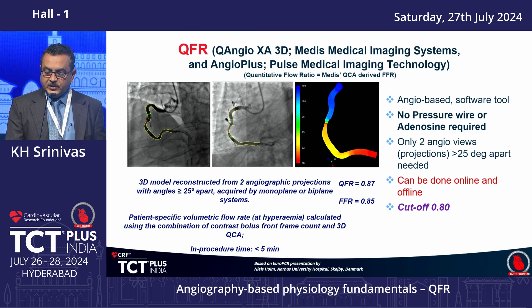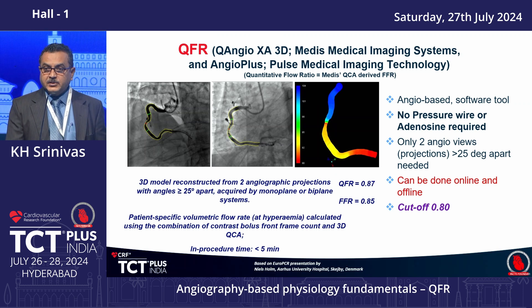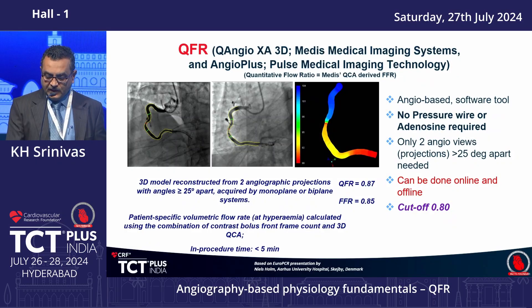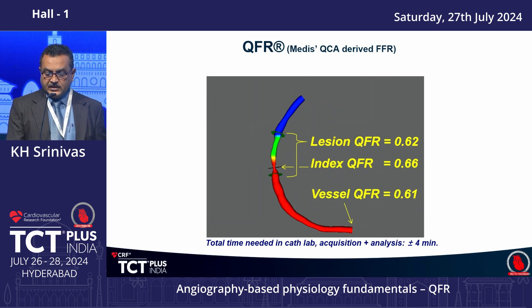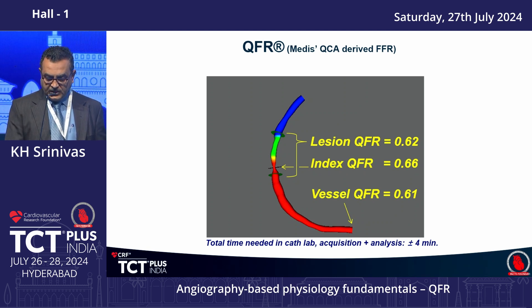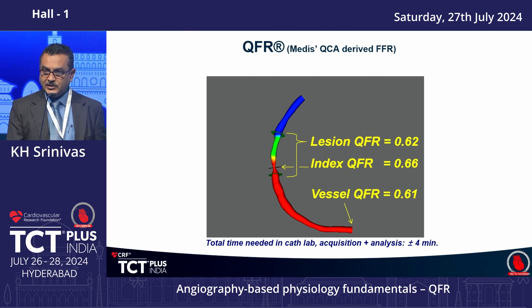The attraction is that no pressure wire is involved and no adenosine or hyperemic agent is required. We need good, true angiographic views separated by 25 degrees. It can be done online and offline, so one can analyze images later in their room. The cutoff is taken as 0.8. It is a 3D reconstructed image. Analysis may take anywhere from 5 to 10 minutes in the cath lab, though more time may be needed initially as some things must be corrected manually, and there is a human element where things can go wrong.